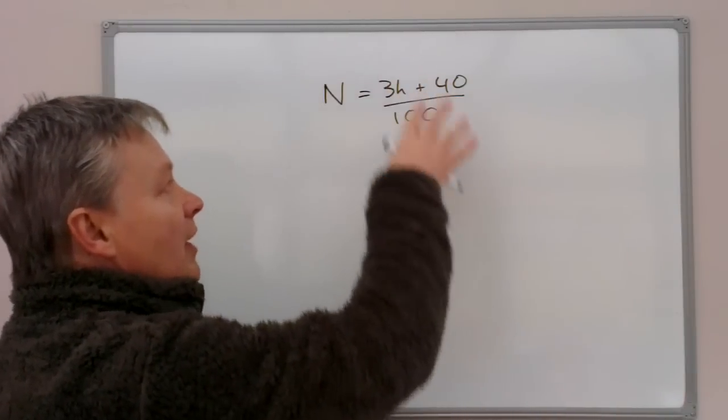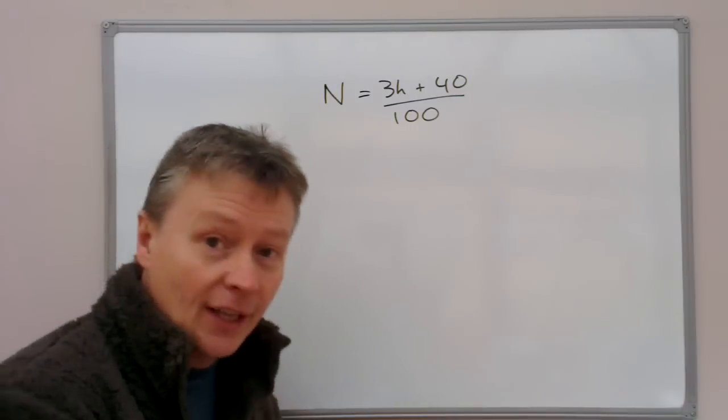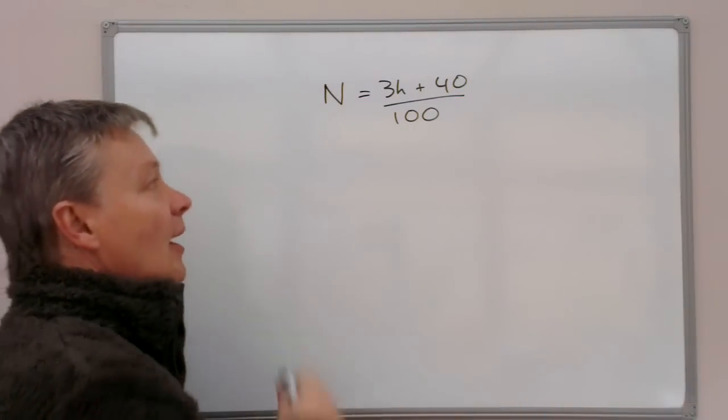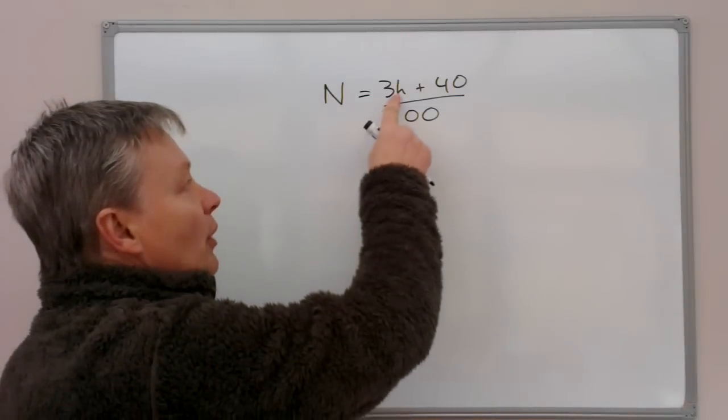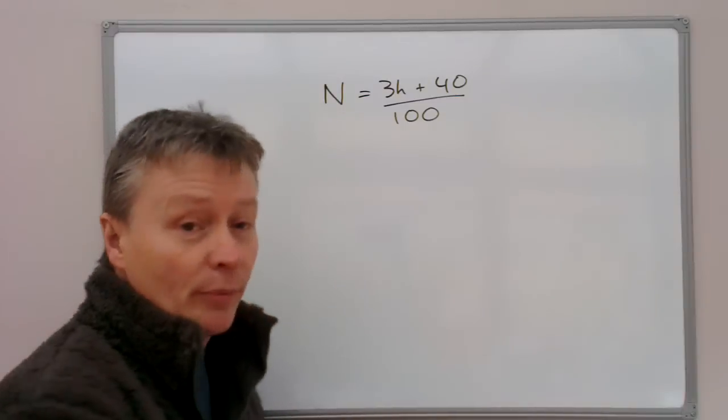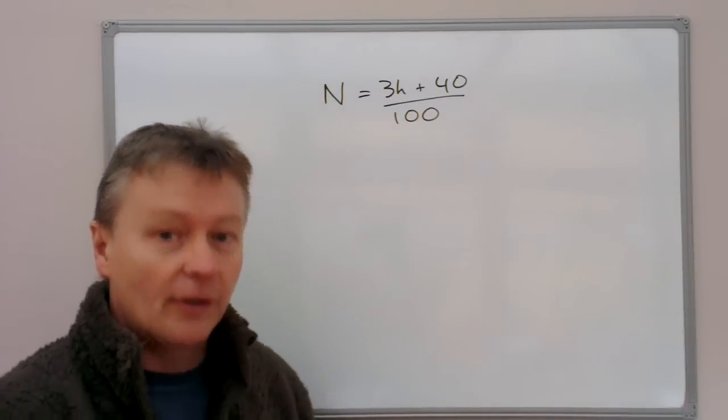So in other words, we've got to rearrange this so that if we have a value of N as part of our normal calculations, then by rearranging this formula, we'll be able to calculate a value of H.